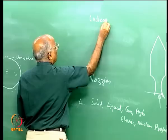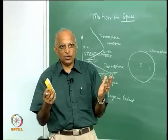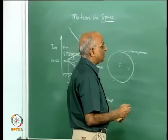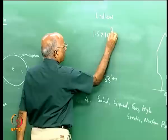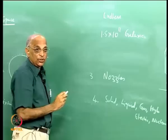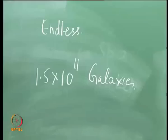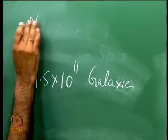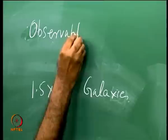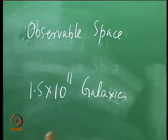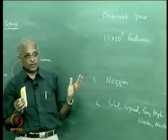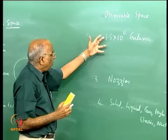Space is sort of endless — it keeps going to infinity. We must be capable of defining what constitutes space. Going back to see what is there in space, in the observable part of space we have something like 1.5 × 10¹¹ galaxies. Space is still beyond what we can observe, but what I can see is only this much. So what are galaxies?